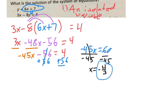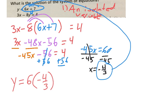So if I know the x value where they meet, I can plug this x value into either equation to find the y value. I'm going to choose to plug it into the top one. Does anyone know why? Because it's already in y equals form. The y is already by itself. So now if I plug in y equals 6 times x, which is negative 4 thirds, plus 7,